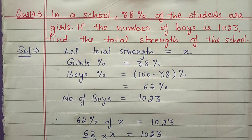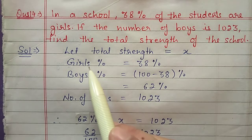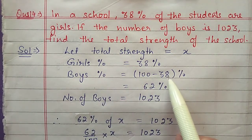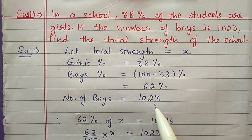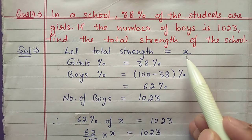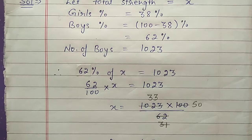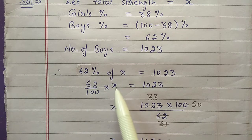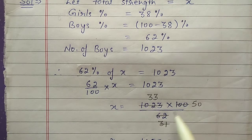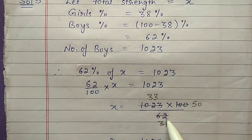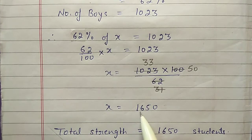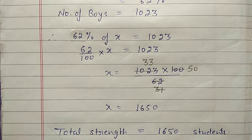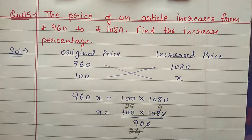Question number 14: in a school 38 percent of the students are girls, and if the number of boys is 1023, find the total strength of the school. Suppose the total strength is x. Girls are 38 percent, so boys will be 100 minus 38 equals 62 percent, and the number of boys is 1023. So 62 percent of total strength equals 1023 — that is 62 by 100 into x equals 1023. Shift 62 by 100 to the other side, cancel with 2 table then 31 table — x equals 1650. Total strength is 1650 students.